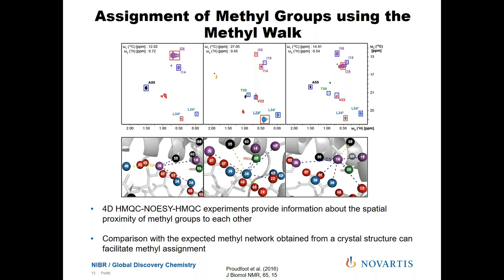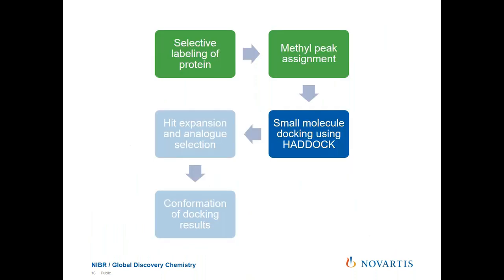This methyl walk can be done manually, but there are now automated methods available. One is from a group in Oxford who developed a process called MAGMA — they take the spectra and peak lists you have produced, automatically walk through and compare to a crystal structure, and provide you with a peak list at the end. So we've now labeled our protein and assigned our methyl peaks; now we need to start using HADDOCK to dock these small molecules into the protein active site.